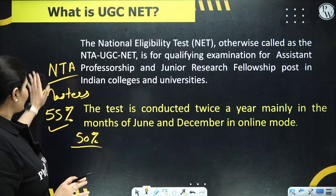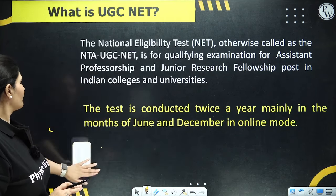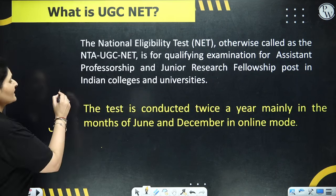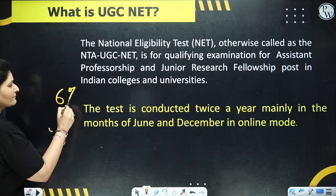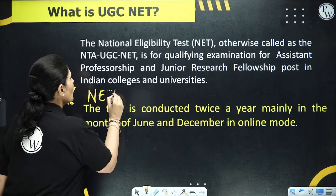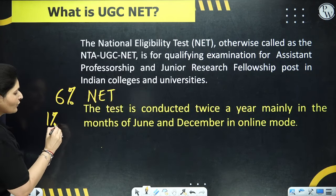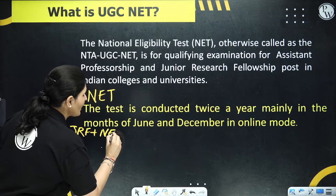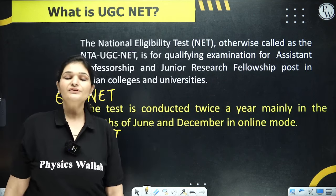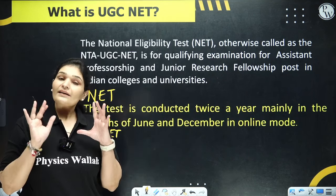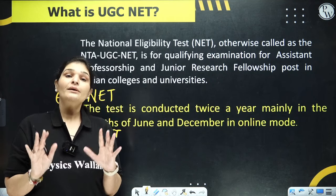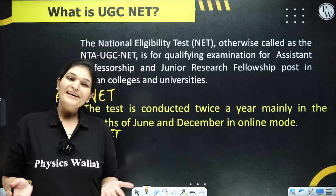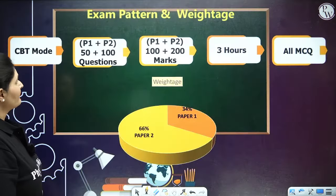UGC NET exam is conducted twice a year, mainly in June/July or December. Top 6% of students get a NET certificate, and the top 1% of students get a Junior Research Fellowship along with NET. Junior Research Fellowship means the government will give you a scholarship for 5 years to do your PhD — along with NET, you also get a substantial scholarship amount.